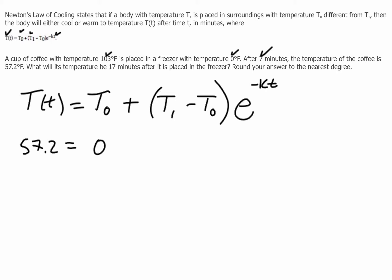That was the surrounding, so that would be 0 plus it starts at 103. So 103 minus 0 times e to the minus k, that's a constant probably of cooling, times the time, and it took that seven minutes. So now let's rework this formula. So 57.2 equals 0, I can disregard. 103 minus 0 is just 103, so 103 e to the minus k times 7. So it looks like I'm solving for k.